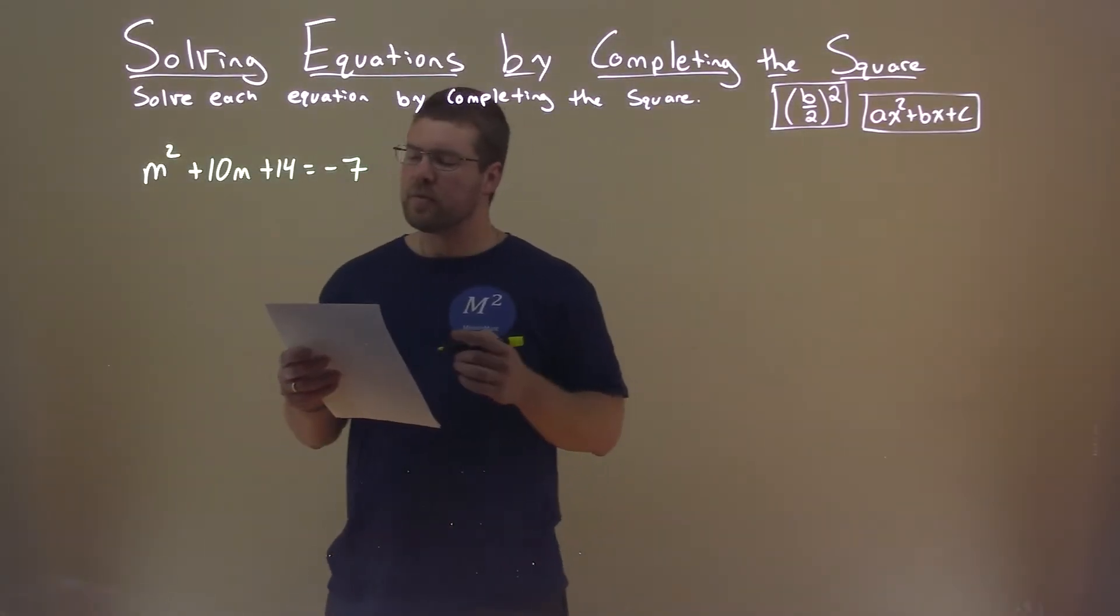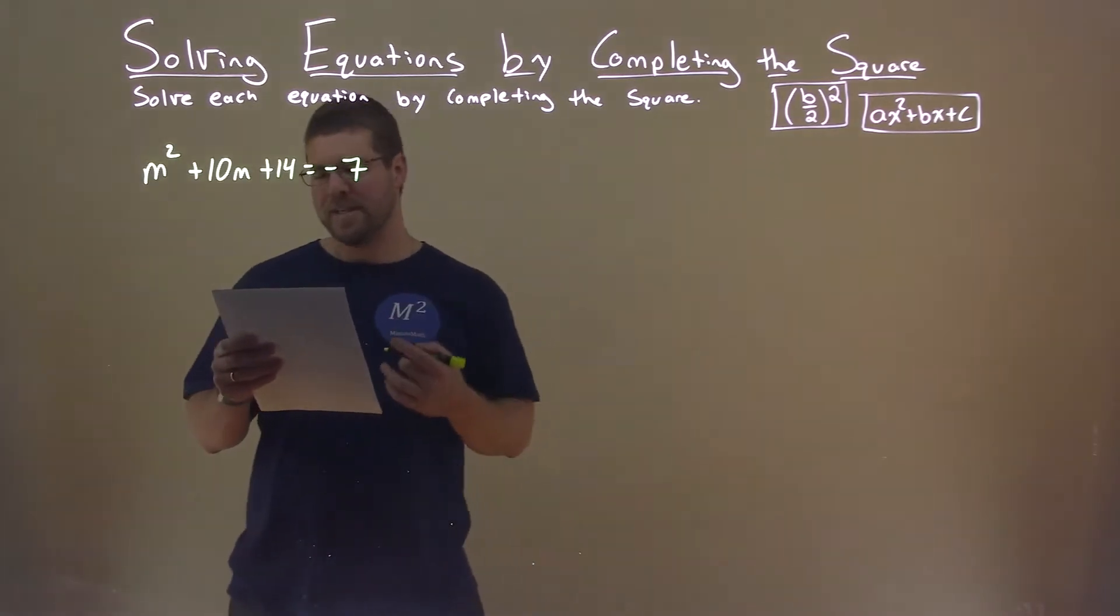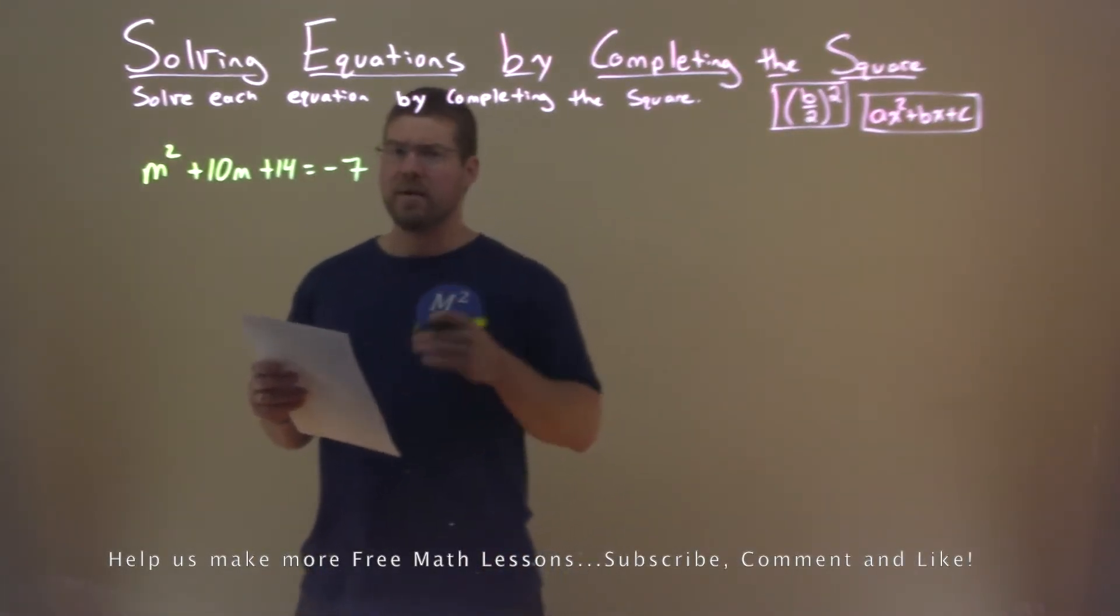We're given this problem right here: m squared plus 10m plus 14 equals negative 7, and we want to solve this by completing the square.